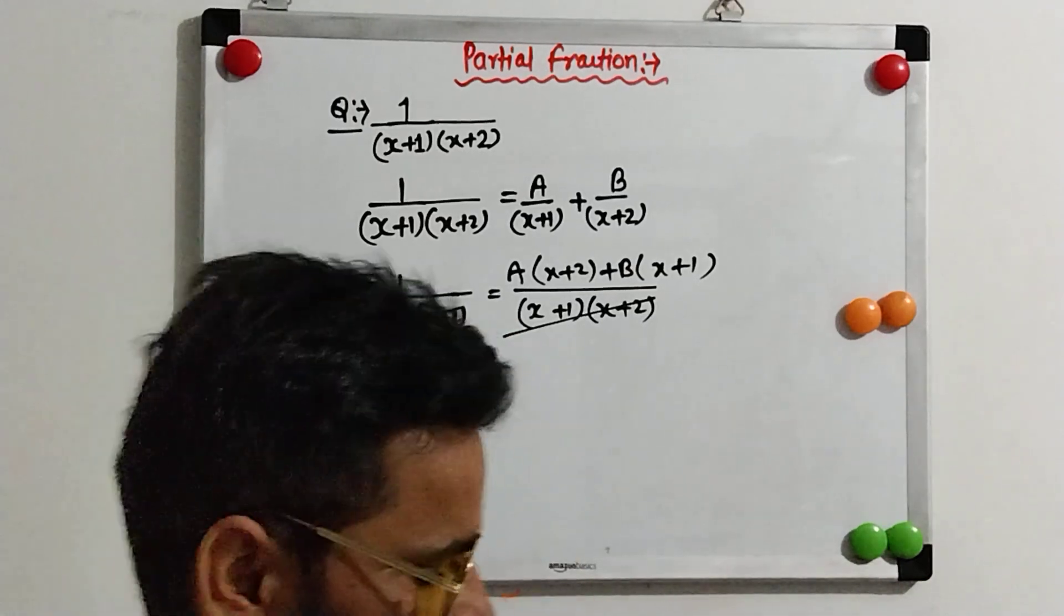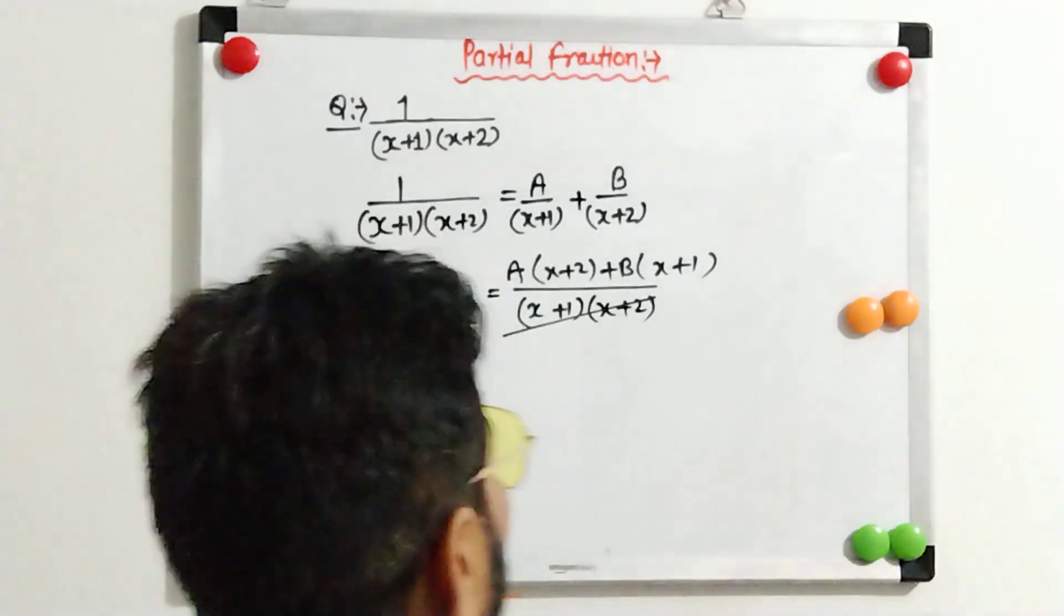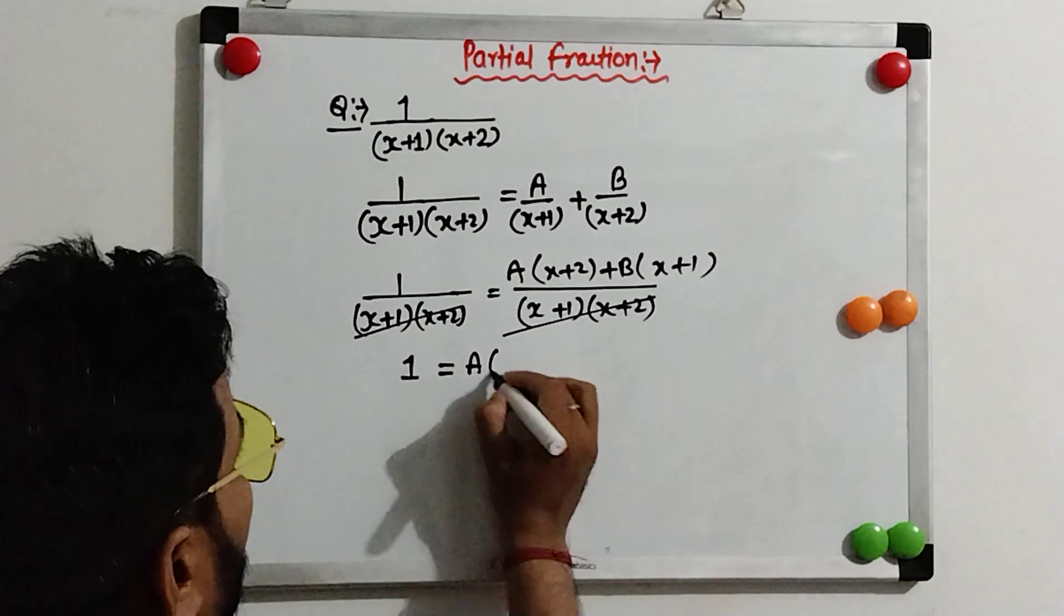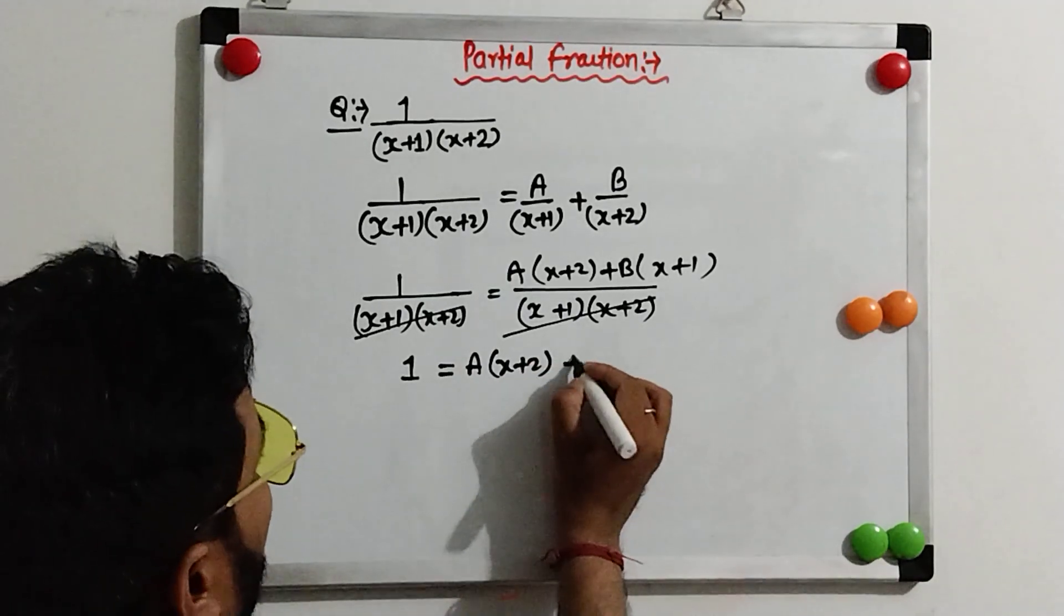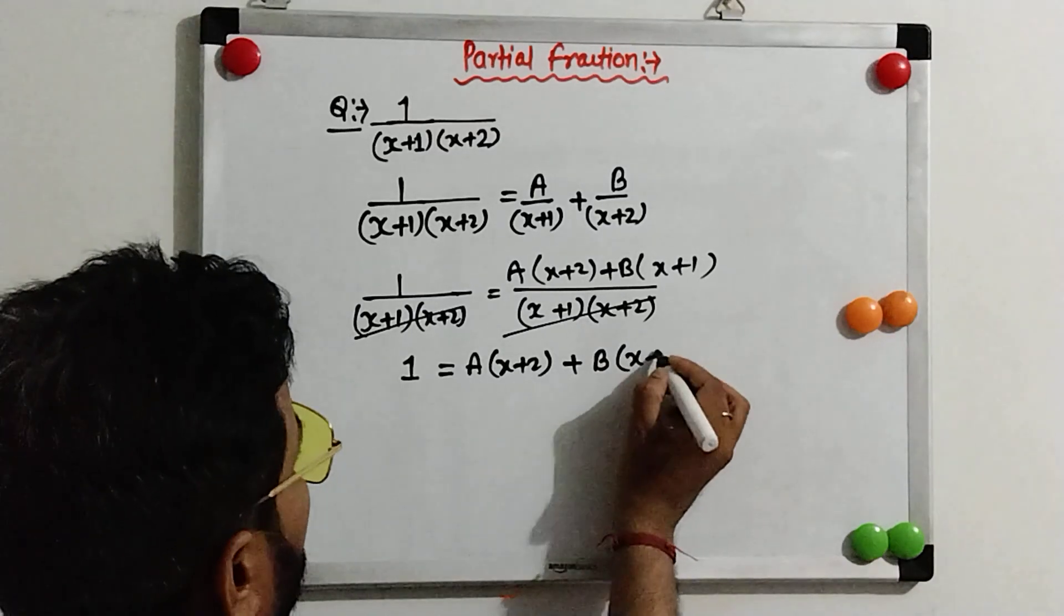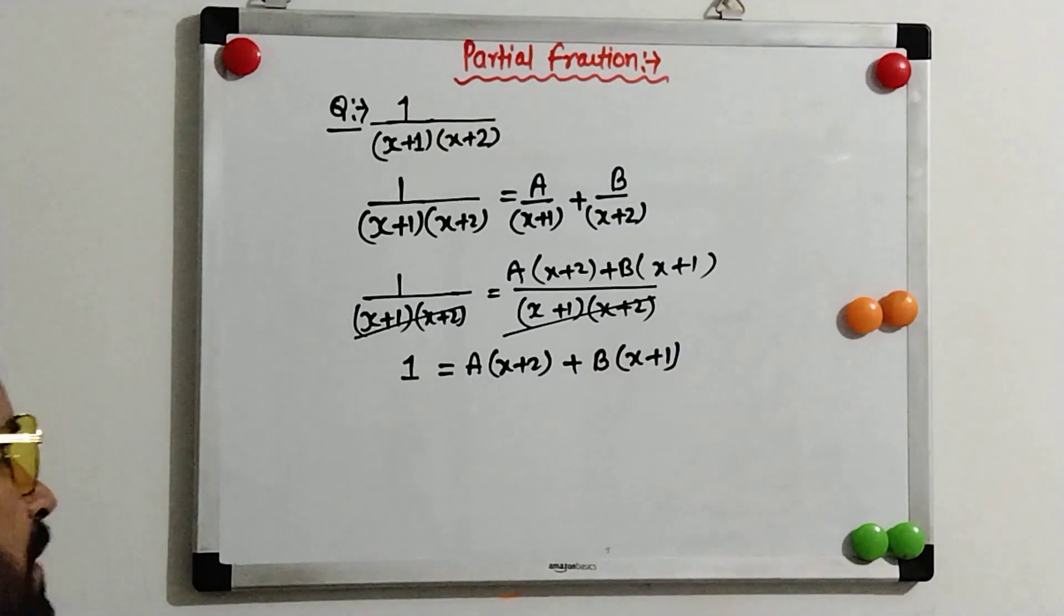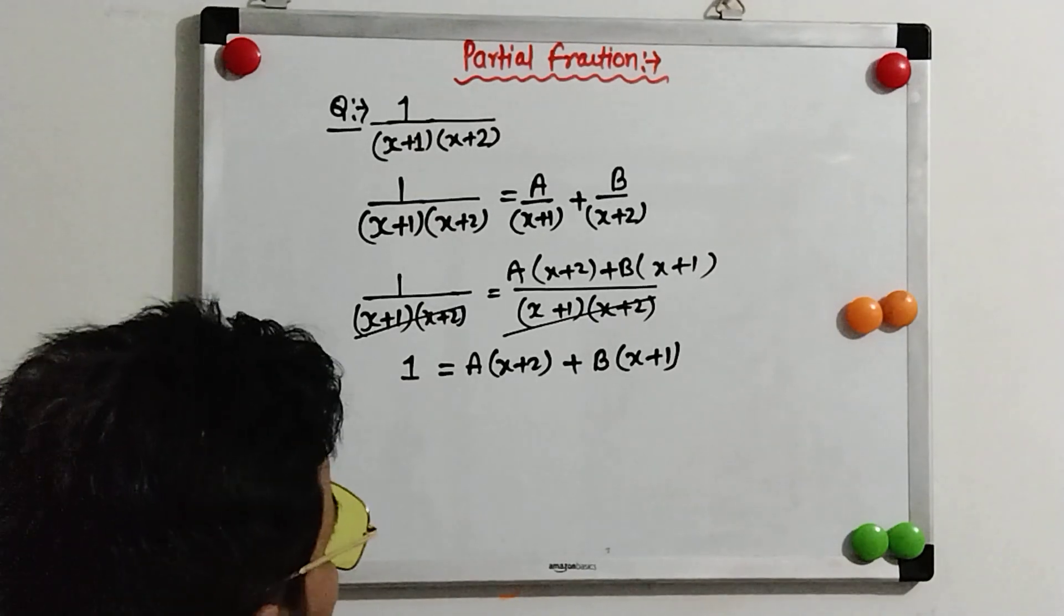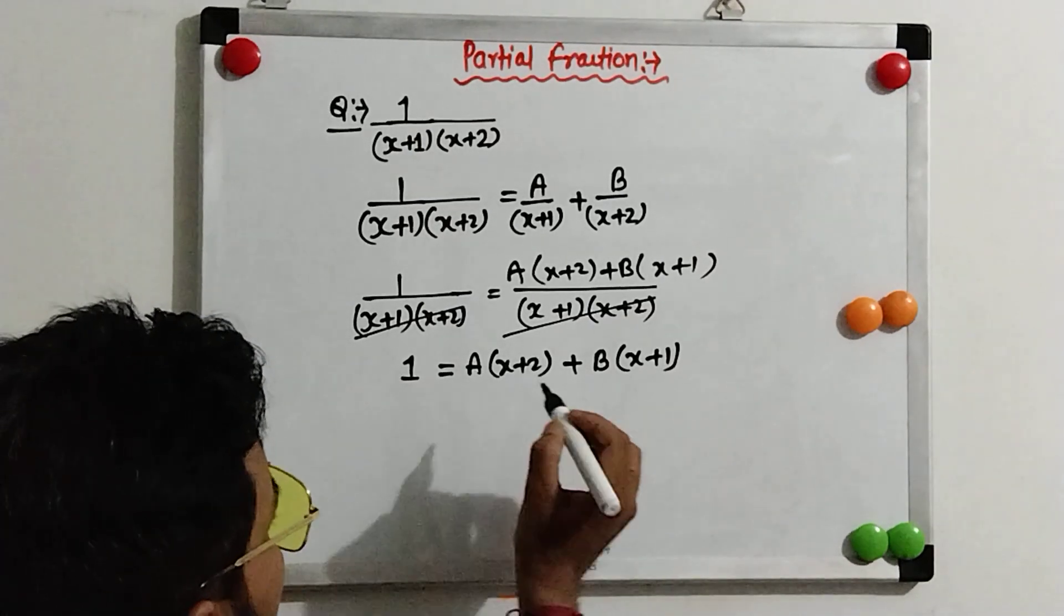This will be cancelled out to each other. So, 1 will be equal to A times (x+2) plus B times (x+1). Now, we have to find out the value of A and B. Our aim is to find the values of A and B.